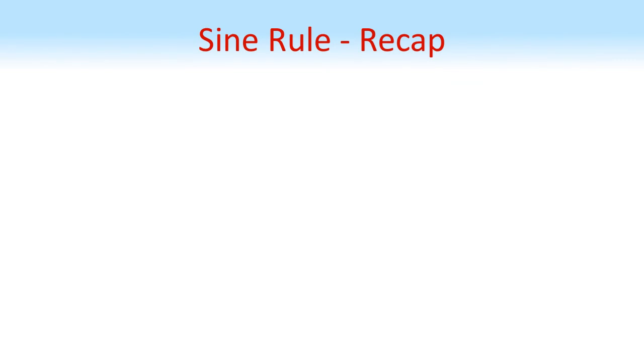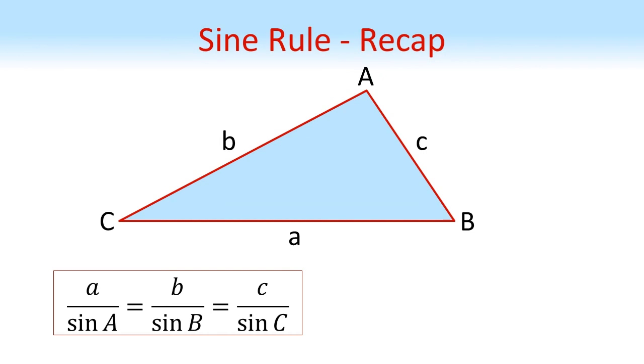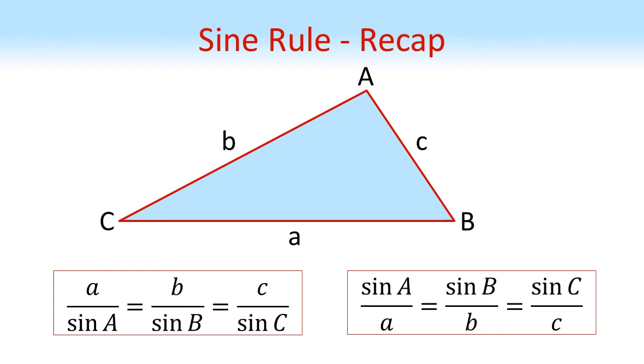So to recap, we've got any triangle. We label the sides lowercase a, b, c and we label the angles with uppercase A, B, C, making sure that the uppercase of each letter is opposite its own lowercase value. Then a over sine A equals b over sine B equals c over sine C. Or if you're trying to find a missing angle, we can flip the fractions upside down to get sine A over a equals sine B over b equals sine C over c.